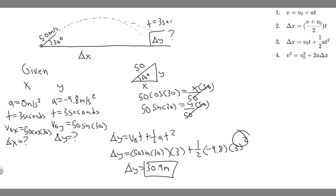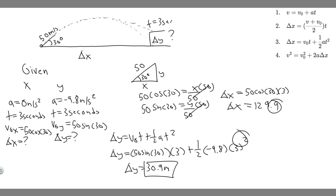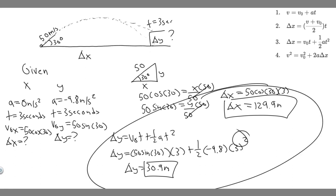Now for x, do the same thing but plug in x values. Delta x equals v₀x, which is 50 times cosine of 30, multiplied by t which is 3, plus one-half times a — but notice a is 0, so that term disappears. In reality it's just the initial velocity multiplied by time: 50 times cosine of 30 times 3, which gives delta x equals 129.9 meters. So 129.9 meters is how far it went in x, and 30.9 meters is the y distance — those are your answers.